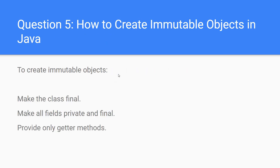Question 5: how to create immutable objects in Java? Immutability means once we create an object we cannot modify its content. Java provides predefined immutable classes like String and wrapper classes. To create an immutable object, follow these rules: make the class final, make fields private and final, provide only getter methods, and do not expose the actual object — instead provide a clone or copy of it.